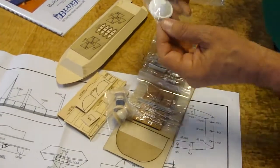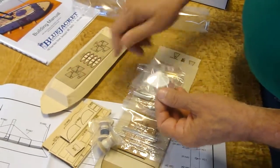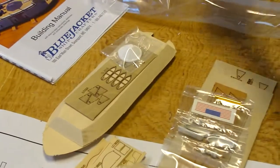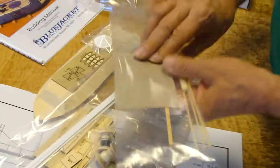There is a cast resin pilot house that gets sheathed in laser-cut material. There is some styrene and brass. There are some miscellaneous sheets and pieces of wood.